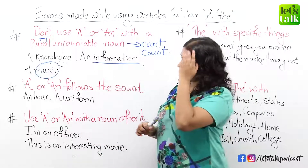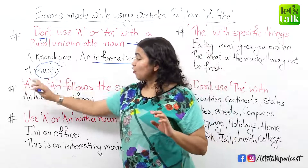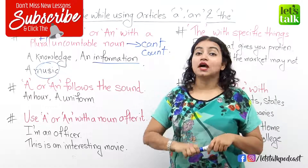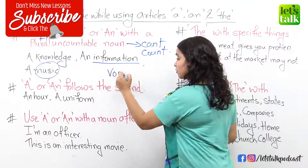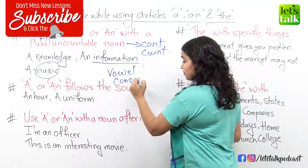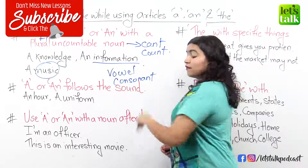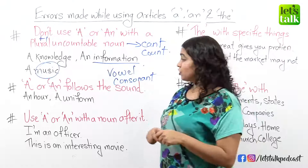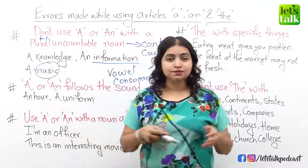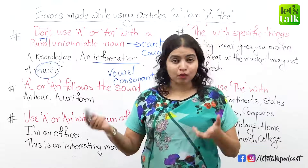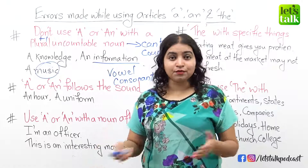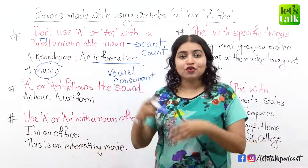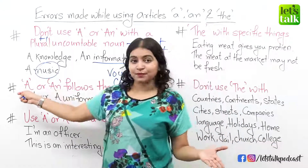Rule number two tells us that the article a or an will be used only before the sound — it could be a vowel or a consonant sound. Now growing up when we learned English, our teachers would always tell us that you use a in front of a consonant and an before a vowel, and they were right. You use an before a, e, i, o, u which are vowels, and a before the remaining consonant letters.